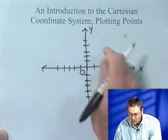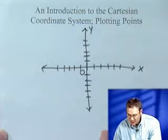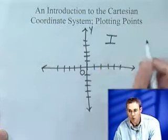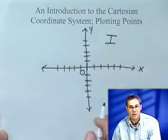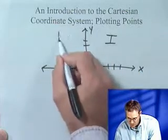Now notice we've separated the system into four quadrants. The way we label these quadrants, we start here and we'll call that quadrant one. We usually use Roman numerals and we go counterclockwise, so we have quadrant I, quadrant II, quadrant III, and quadrant IV.